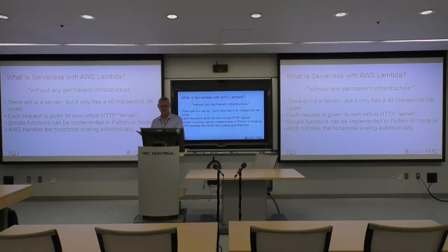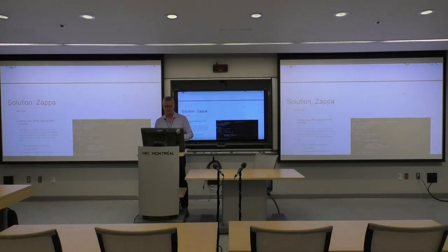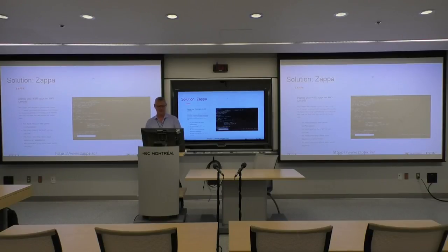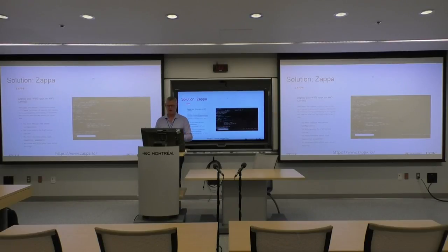There's still a server, but it only has a very short lifetime. AWS handles the scaling. The solution we found to run LTIs is a thing called Zappa. It lets you deploy a WSGI app on AWS Lambda. It takes away all the tedious configuration of web servers — you don't have to worry about security or load balancing. Lambda does all of that for you.